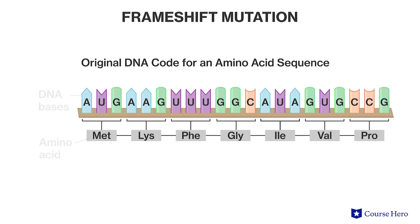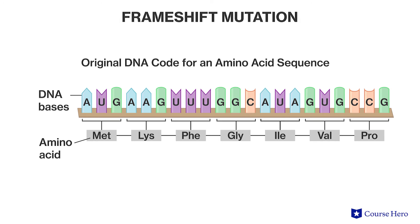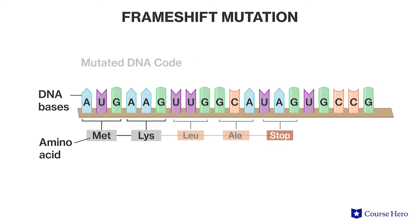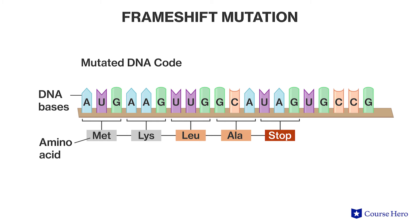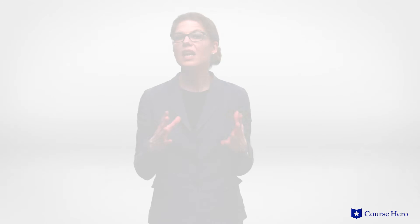The second major class of gene mutations are the insertions and deletions, and these can result in what is known as a frameshift mutation. Each codon codes for an amino acid. If the base from one of these triplets of bases is deleted, the reading frame shifts to produce a different amino acid. Instead of phenylalanine, this codon now codes for leucine. This will most likely result in an altered protein. Inserting a base also results in a frameshift with similar consequences on the protein's function.